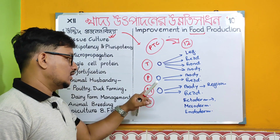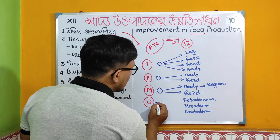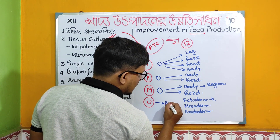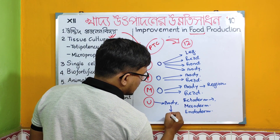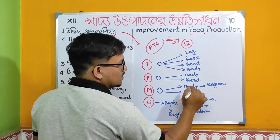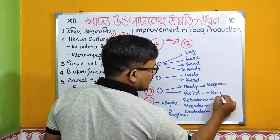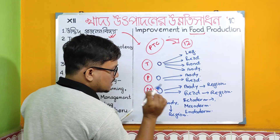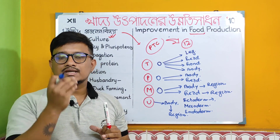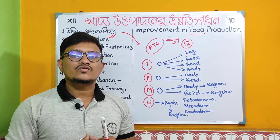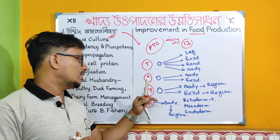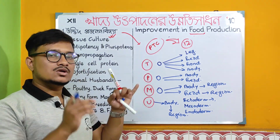Unipotency means a single lineage — a single direction of development. Suppose a cell can generate only a single body part in a single direction. This means unidirectional production — a single direction. These are the different examples of unipotency.